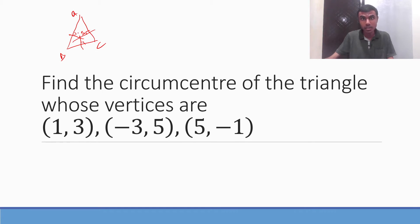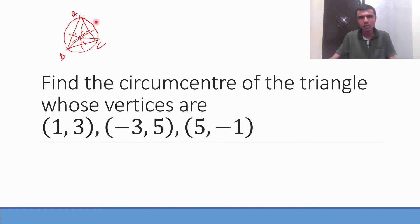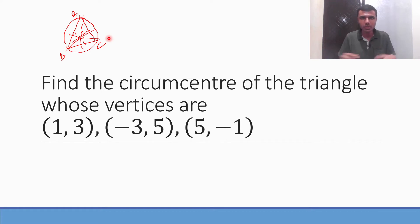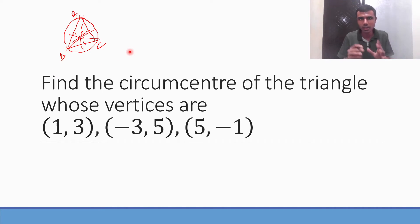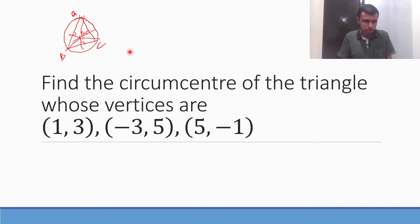If my triangle has 3 coordinates A, B, C, then SA = SB = SC. You'll get a circle — this circle is called the circumcircle. So SA = SB = SC means the distance from S to A, S to B, and S to C are all equal. This is the property which I'm going to use.